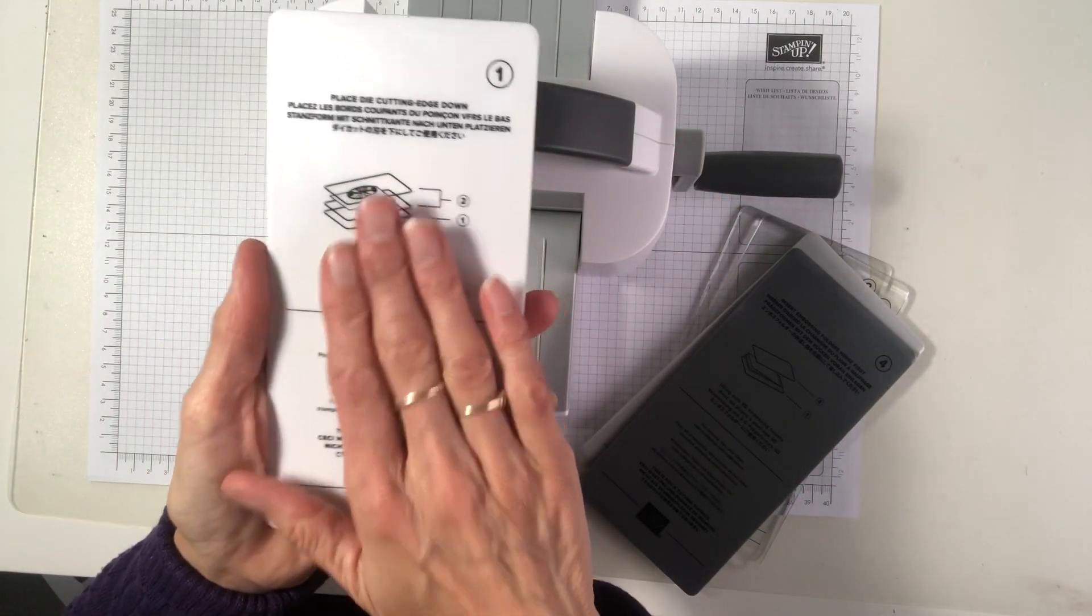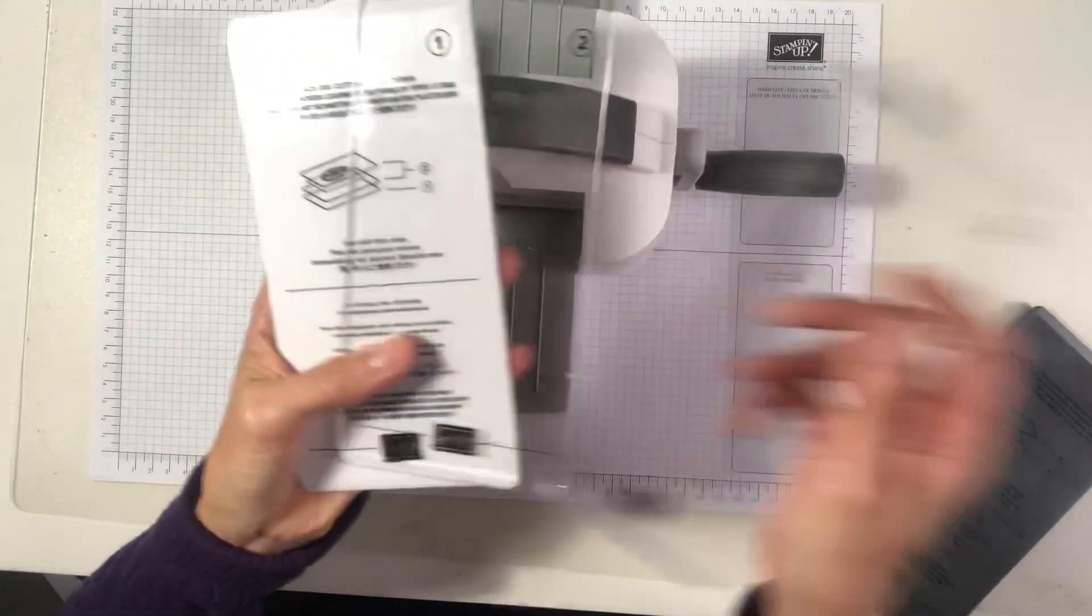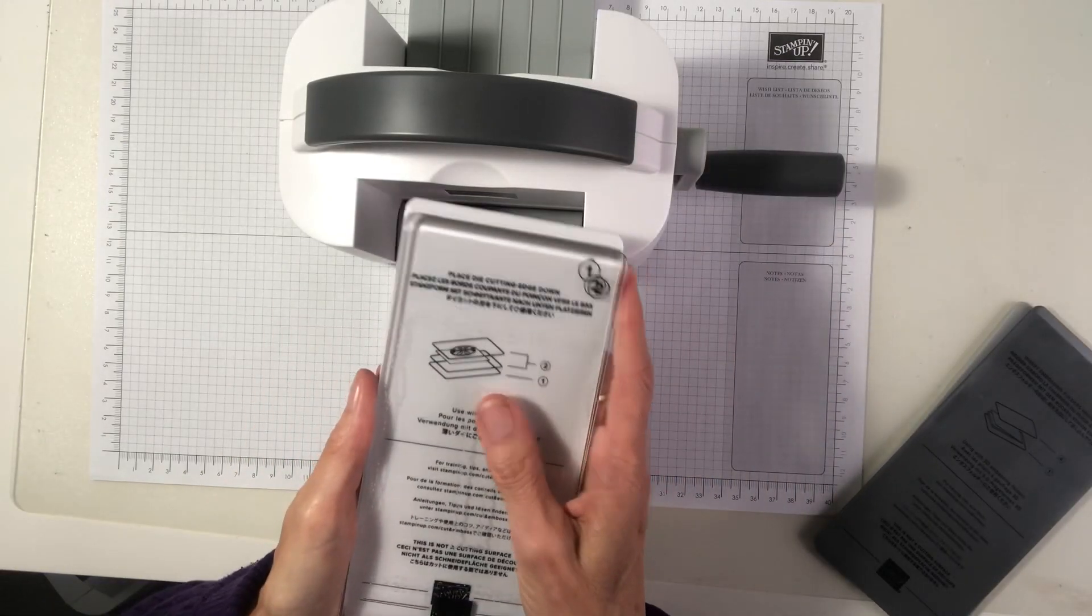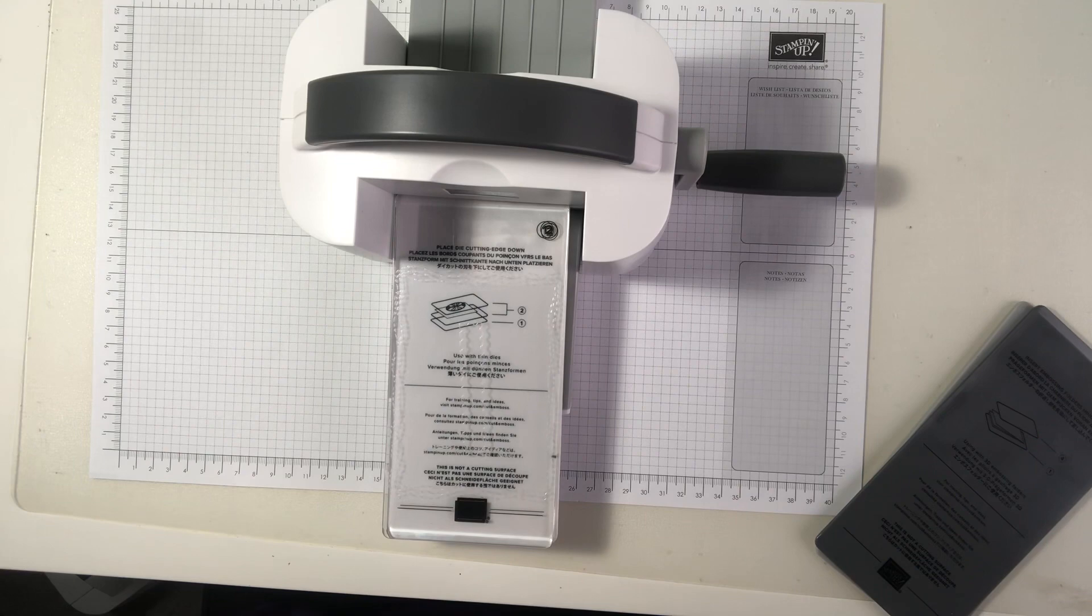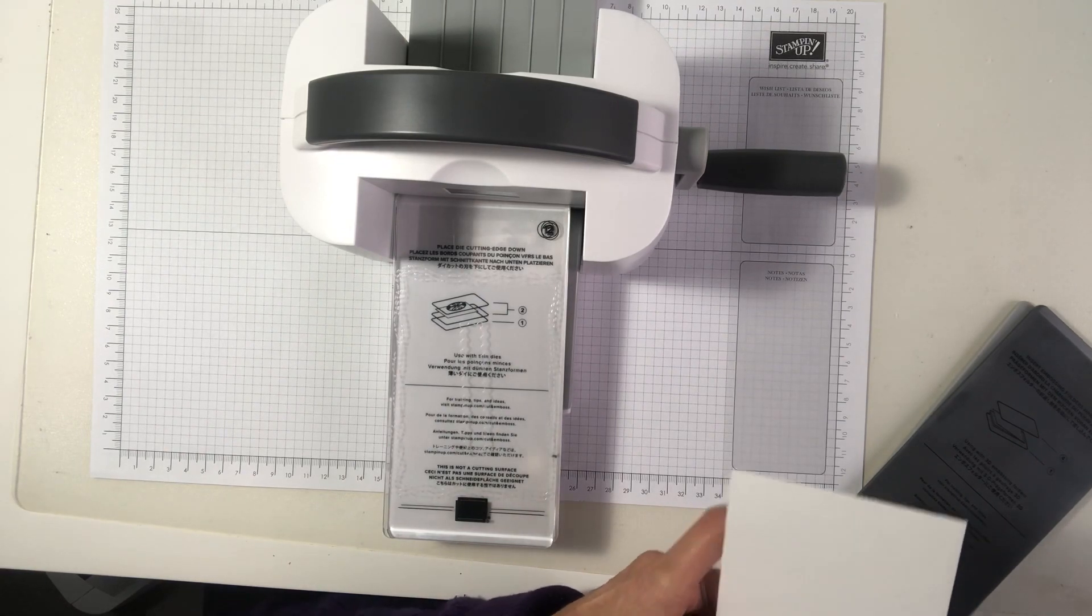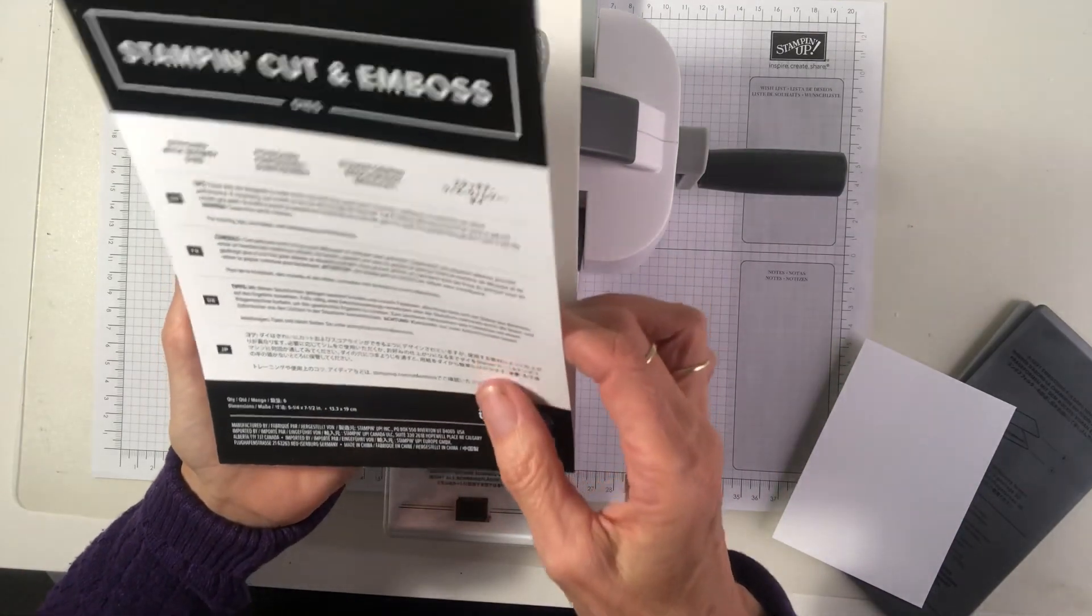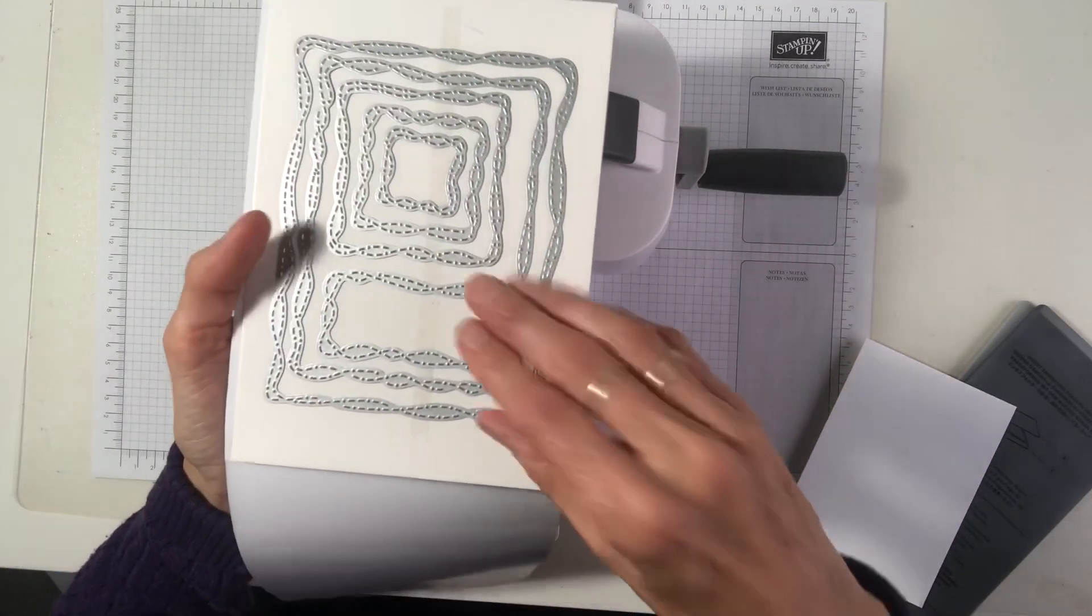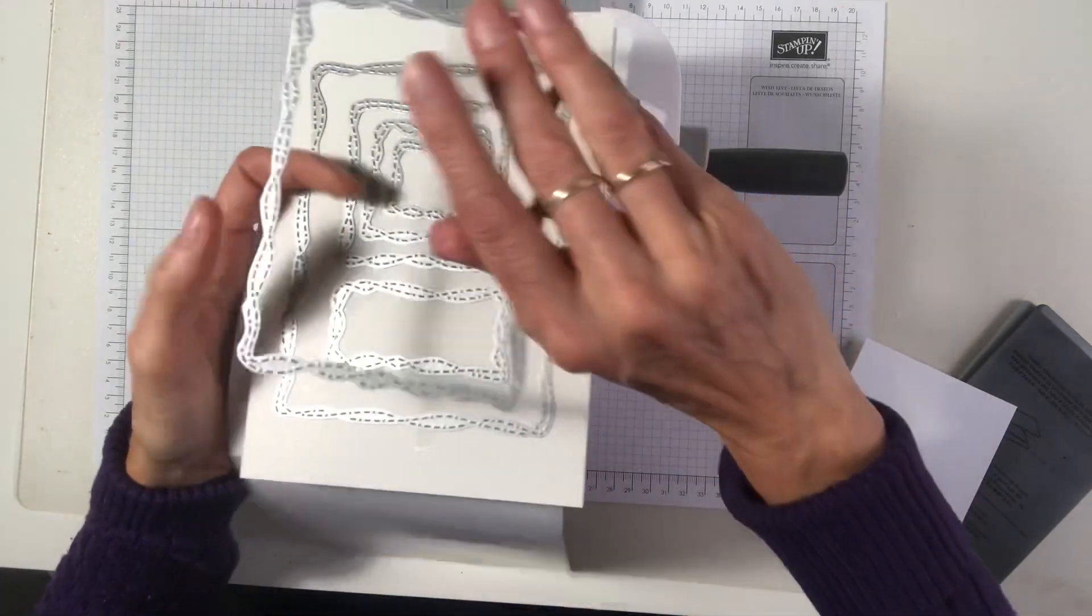So for our die cutting, we've got number one plate. You're going to use the two plates and run that through. So let's get some card and try this out. So I've got some white cut. I'm actually going to use these stitch with whimsy dies.